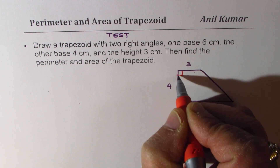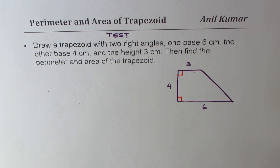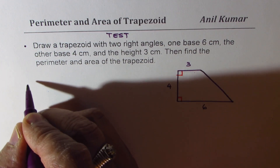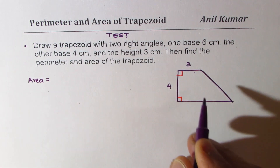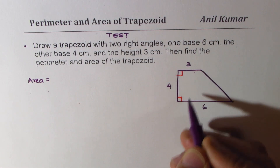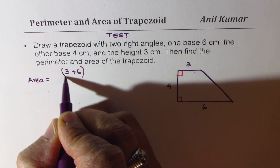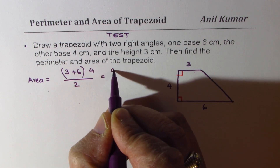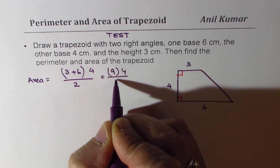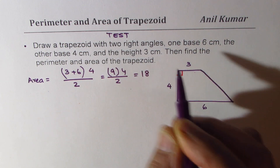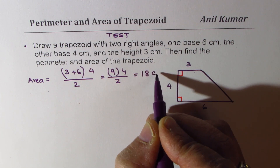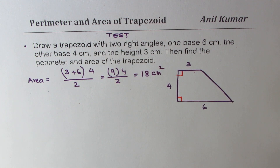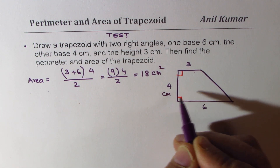We need to find both area and perimeter. Since we are given the parallel sides and the height, area is easy. Area equals the sum of the parallel sides, which is 3 plus 6, times the height 4, divided by 2. That is 9 times 4 divided by 2, which equals 18 centimeters squared.